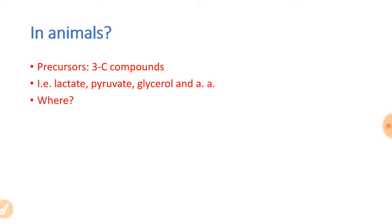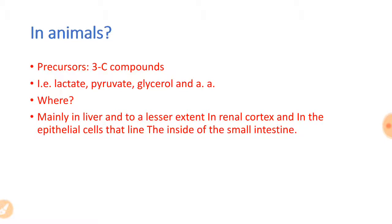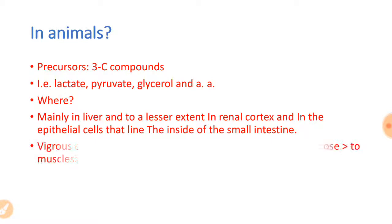Where does gluconeogenesis occur in animals? It occurs mainly in the liver — the major portion takes place there. To a smaller extent it also occurs in the renal cortex and in the epithelial cells that line the inside of the small intestine.